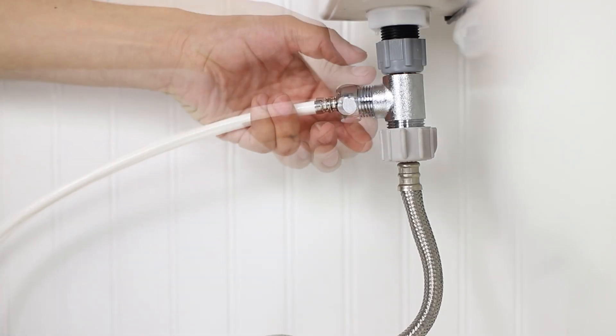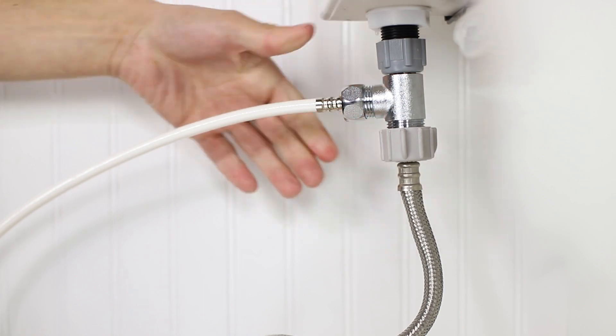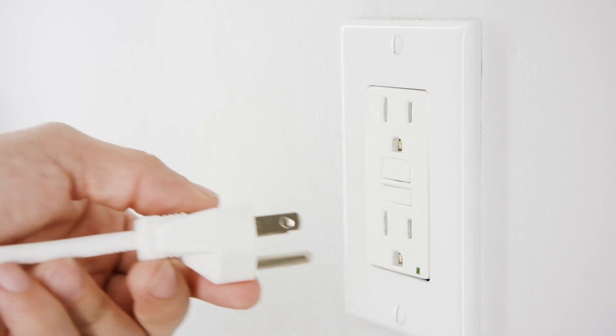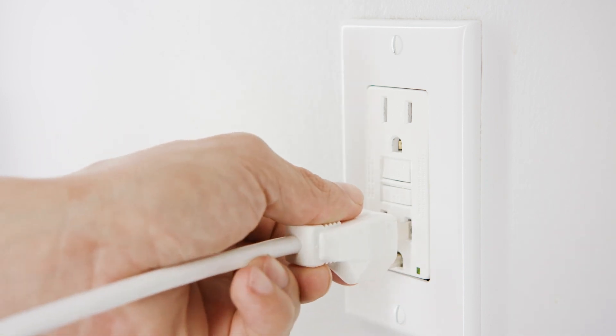Connect the open end of the bidet hose to the T-valve. Slowly turn on the water supply and check for leaks. If there are no leaks, plug the swash into the nearest GFI outlet.